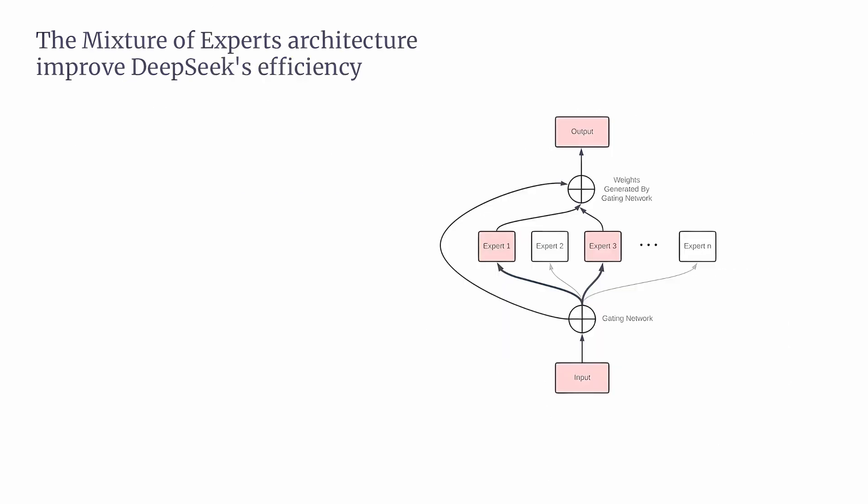Now let's break down how DeepSeek improves efficiency using the mixture of experts, MoE, architecture. Instead of using all of its parameters at once, this model selectively activates only a portion of them, which makes it more efficient and powerful. The first feature is selective activation of experts. Imagine you have a team of specialists, each skilled in different areas. Instead of asking the entire team to solve every problem, you only call on the experts best suited for each task. It uses a gating network to determine which experts to activate based on the input. The model has 671 billion total parameters, but only 37 billion are used at any given time. This means the model isn't wasting resources by running unnecessary computations — instead, it focuses on what matters, reducing both computational load and energy consumption.